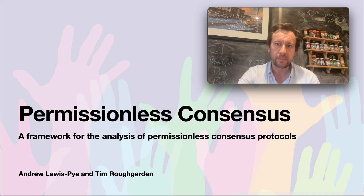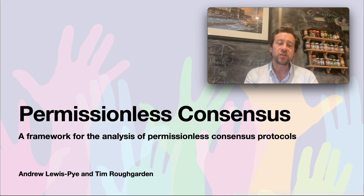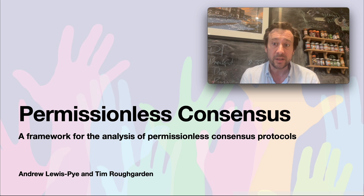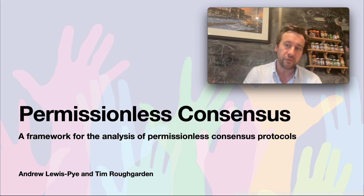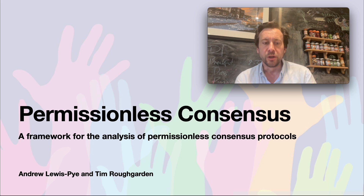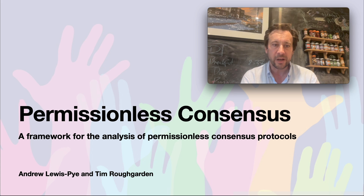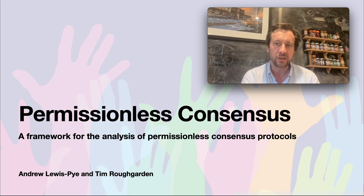Hello everyone. This is going to be a tutorial on a recent paper, which is joint work with Tim Roughgarden, aimed at developing a general framework for the analysis of permissionless consensus protocols, be they proof of work, proof of stake, proof of space, or whatever. In the tutorial I'm only going to be able to go into things at quite a high level, so if you're interested in the details I definitely recommend you check out the actual paper, which is called 'Permissionless Consensus', and you can find that on our web pages.